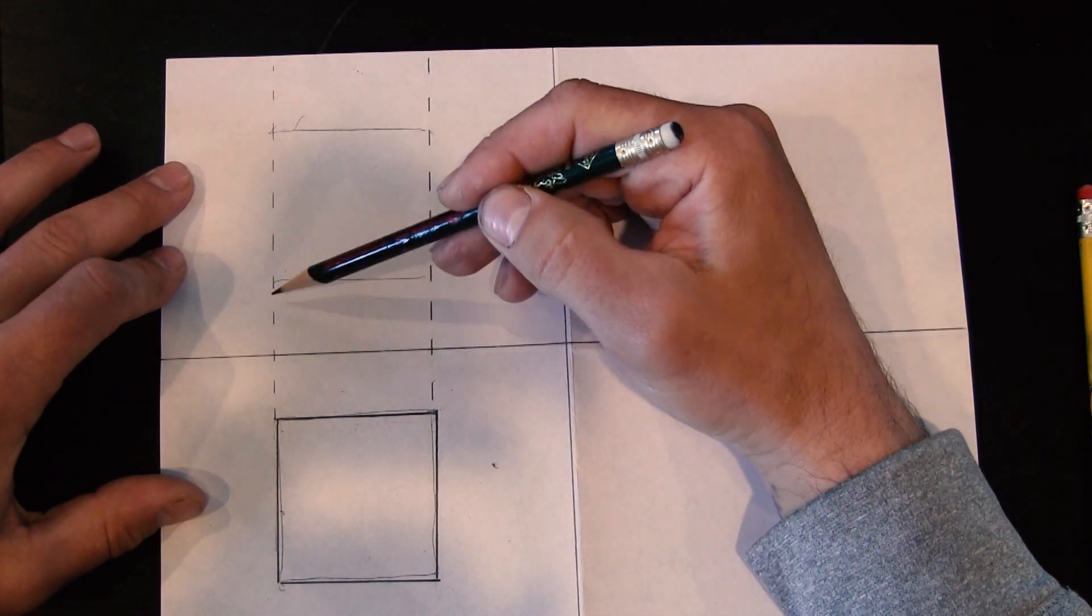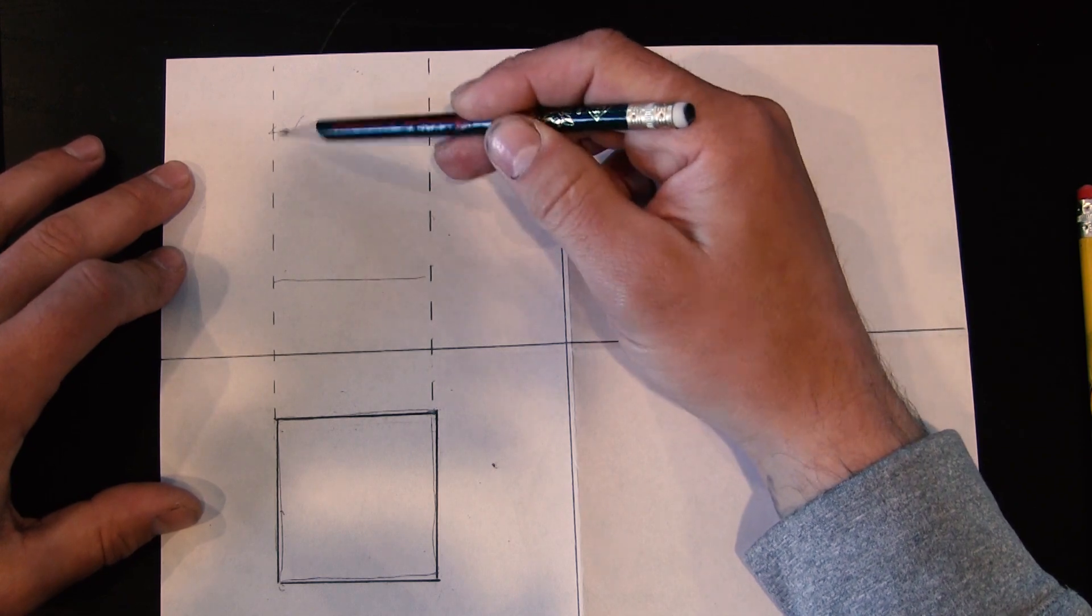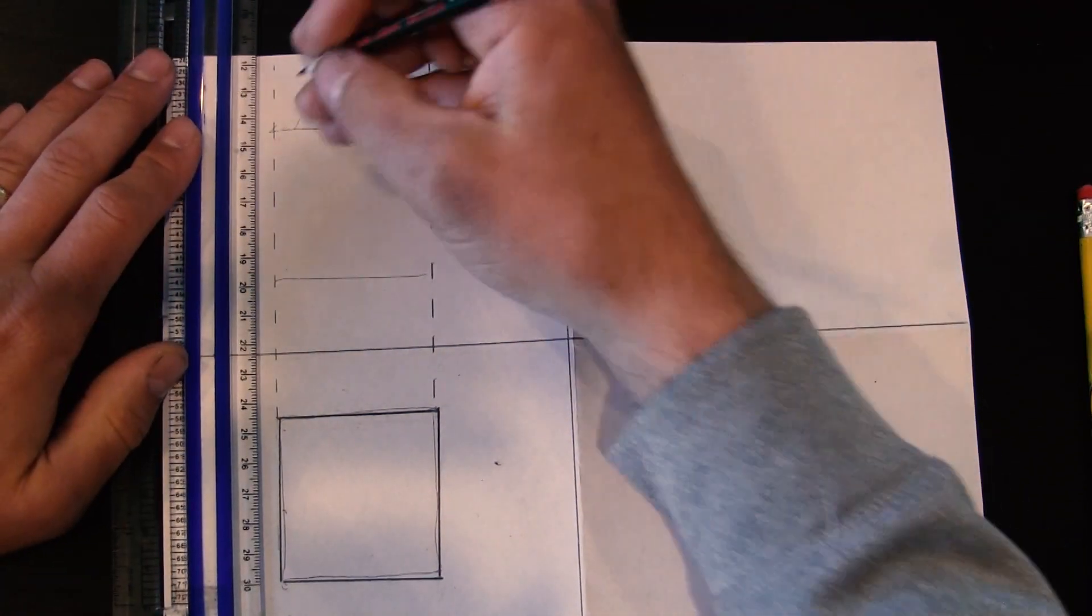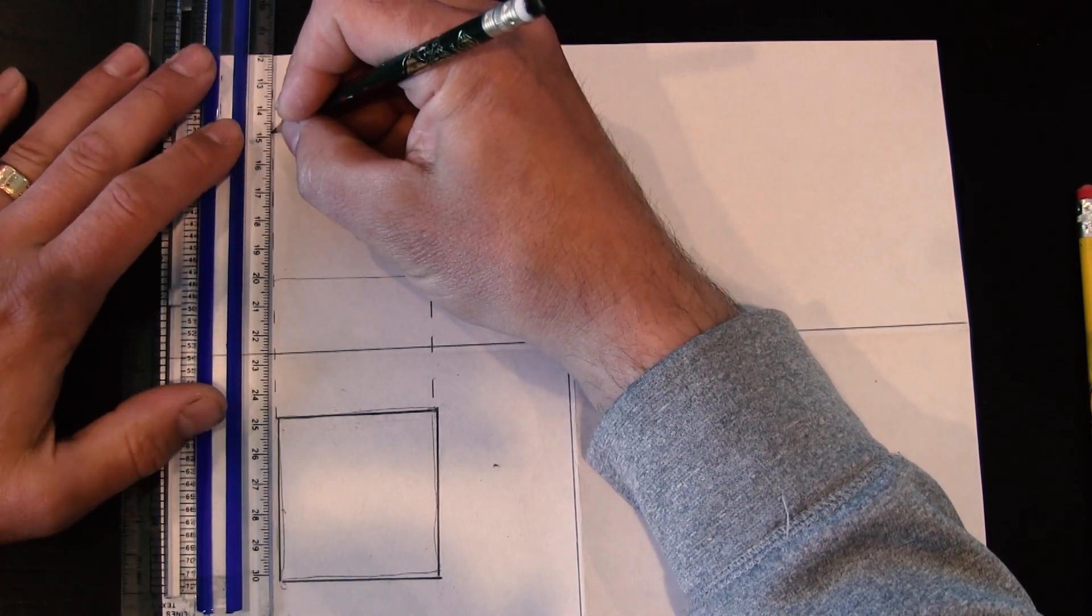So now right here is my top view. I'm going to use my ruler in here to tidy this up.